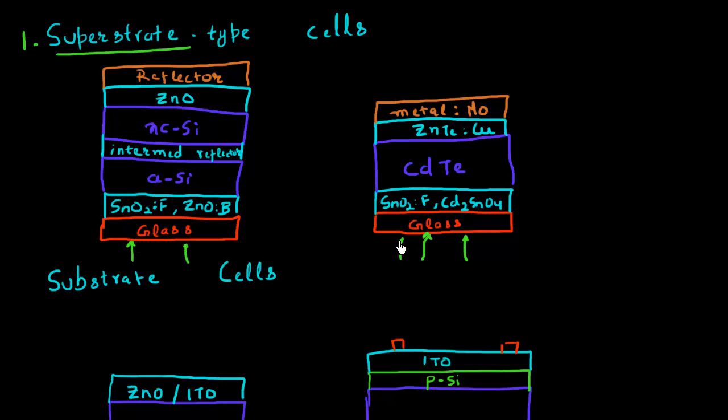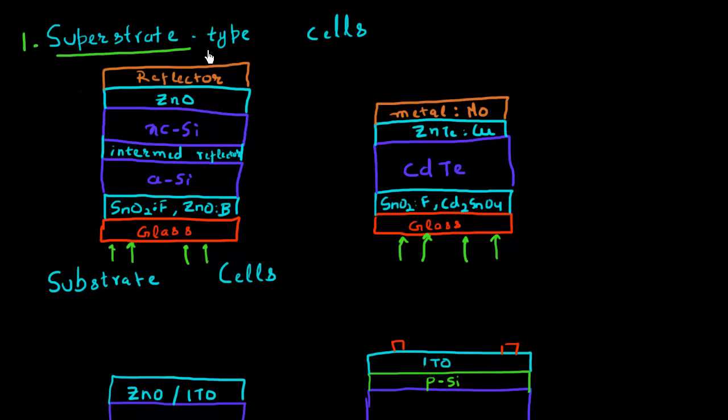Or in this picture, incident from the bottom of the cell. So this superstrate kind of cell design, where you first start with glass and then deposit all the layers on top of it, is very commonly used for amorphous silicon or amorphous silicon nano-crystalline silicon tandem cells. It's also used for cadmium telluride based solar cells, such as the ones sold by First Solar.